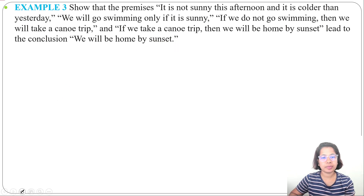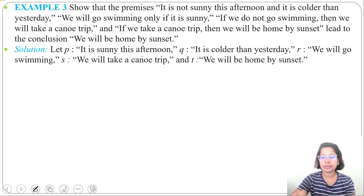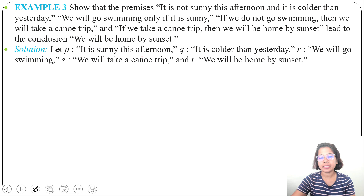We need to prove this conclusion by rules of inference. Let me define variables: P is 'it is sunny this afternoon,' Q is 'it is colder than yesterday,' R is 'we will go swimming,' S is 'we will take a canoe trip,' and T is 'we will be home by sunset.'